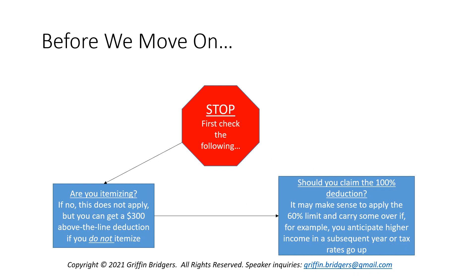You have to check the following. First, are you itemizing? The 100% of AGI charitable contribution only applies if you itemize your deductions for 2021. If you don't itemize, there is a $300 above-the-line deduction available, but only if you do not itemize. It's an either-or: you select either the $300 above the line or up to 100% of AGI below the line.